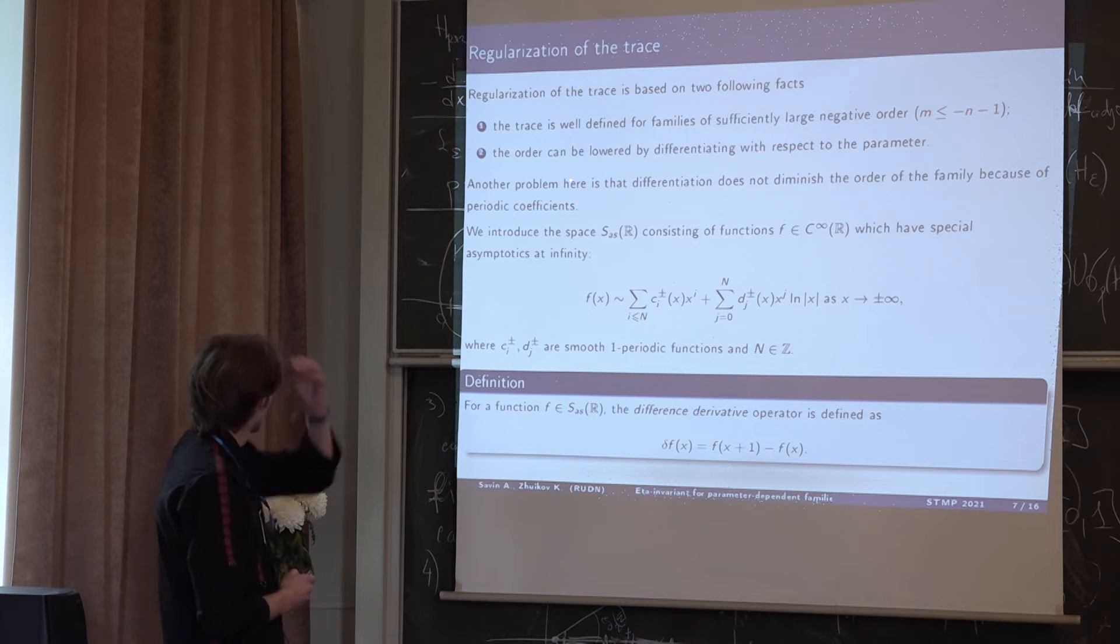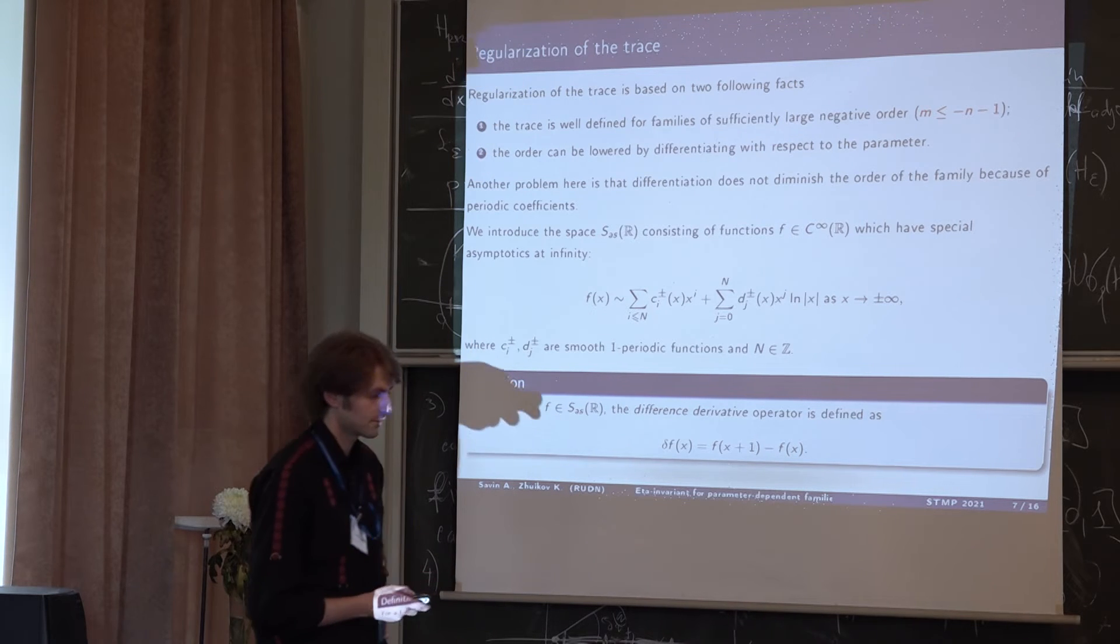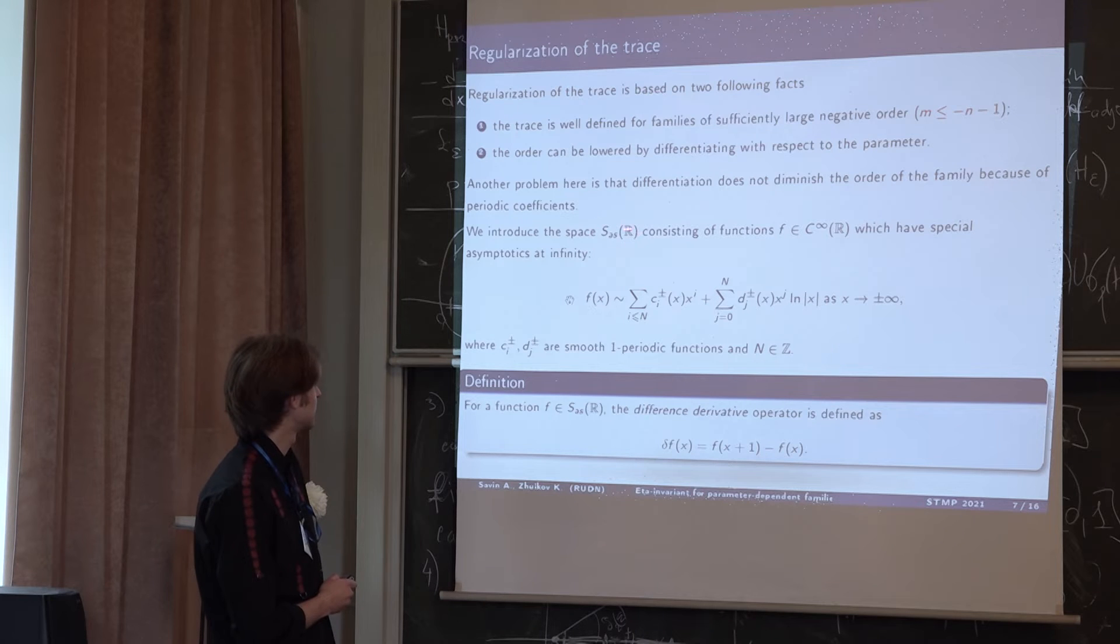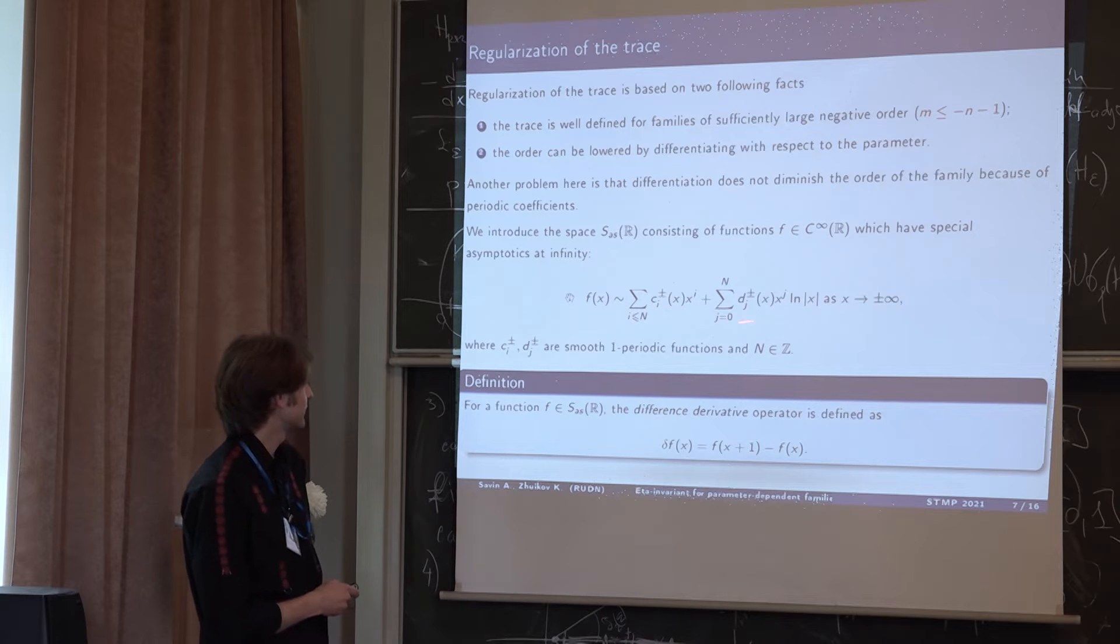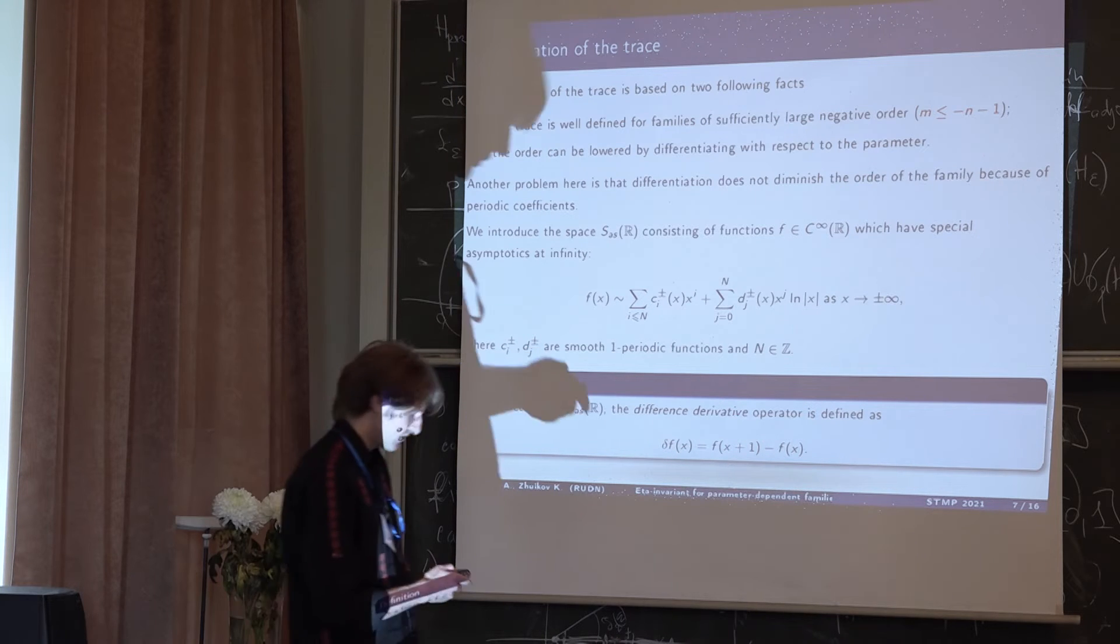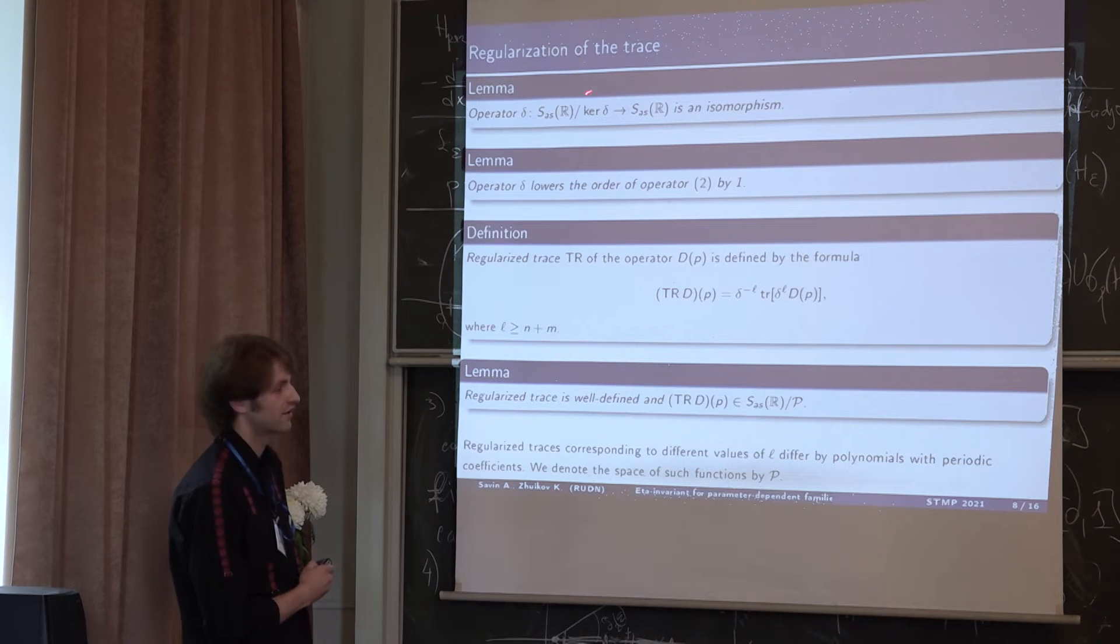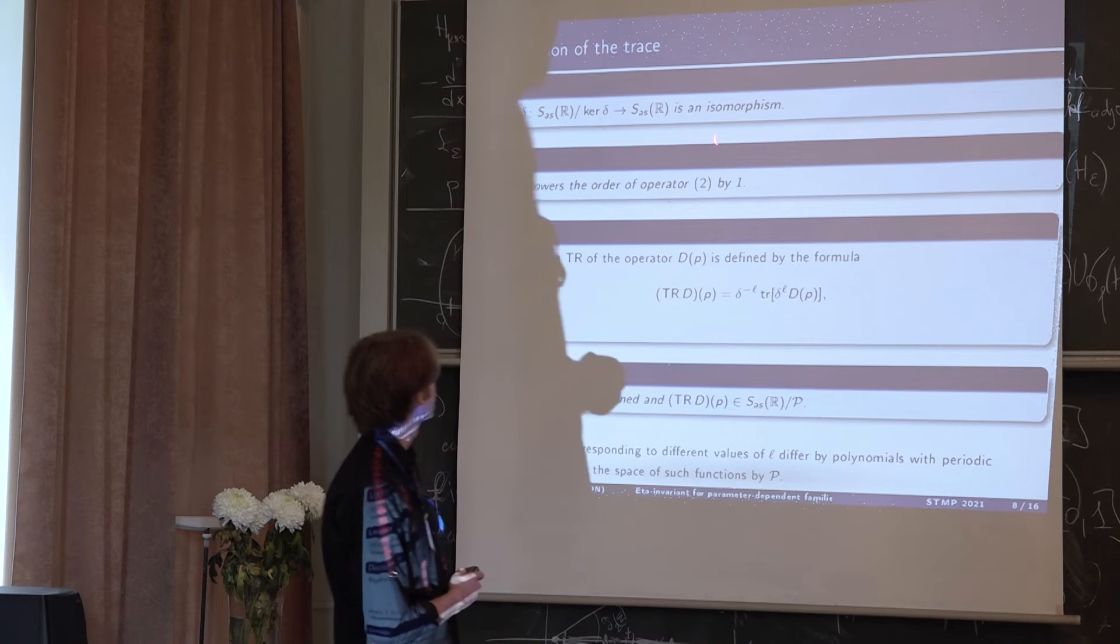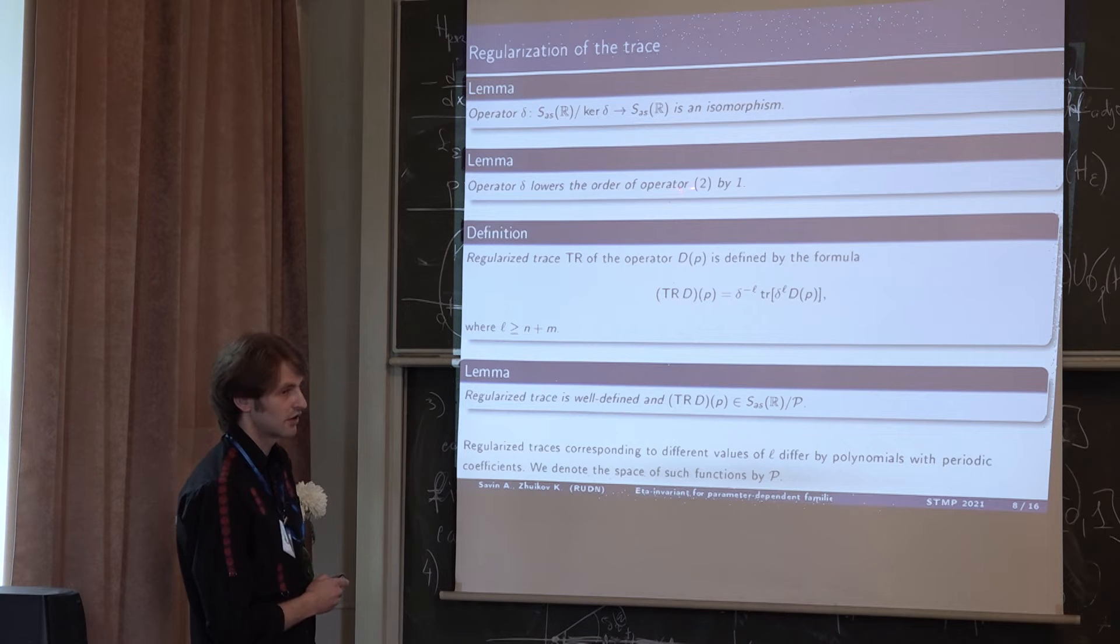To find an alternative to differentiation, we introduced space S_asymptotic of R consisting of smooth functions with special asymptotics at infinity. They look like this and here C_I and D_G plus minus are smooth one periodic functions. We define the difference derivative operator as this. We denoted delta. We just take a finite difference and it appears this operator appears to lower the order of our operator. First of all, this is a lemma. This is actually the main technical result of our work. Operator delta acting in these spaces is an isomorphism. Second result, this operator lowers the order of our operator by one.